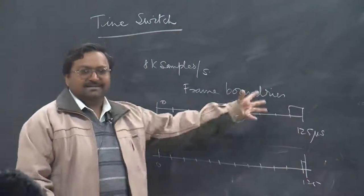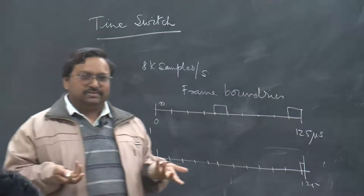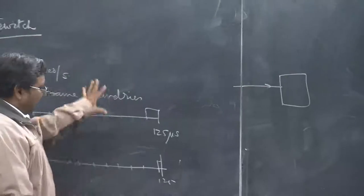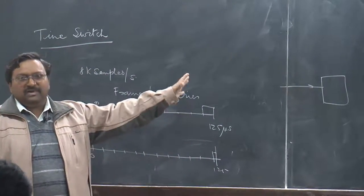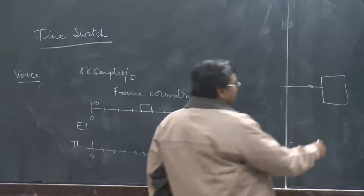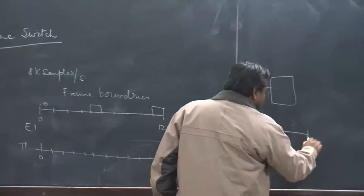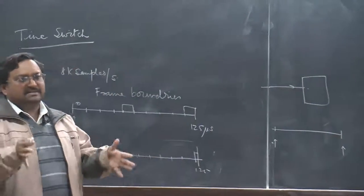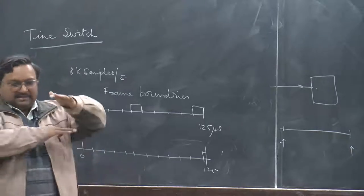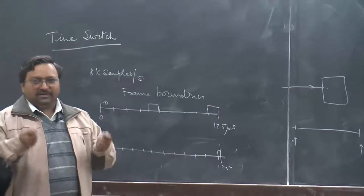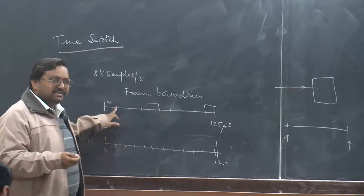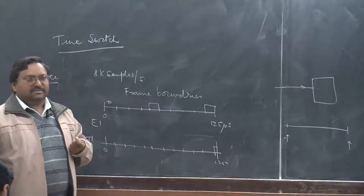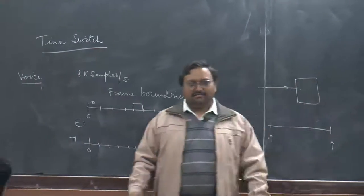The framing overhead is not required inside a switch. The first thing you do is remove all this extra stuff from the frame and generate an internal time frame. Inside the box, the frame boundaries are handled by the device itself — either on a separate channel, a marker, or a clock.